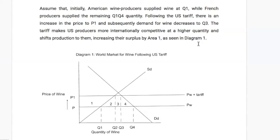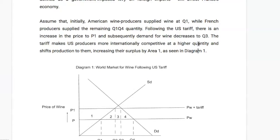Diagram 1 is clearly labeled as 'Diagram 1: World Market for Wine Following US Tariff.' We have quantity of wine on the x-axis and price of wine on the y-axis, going up from world price to world price plus tariff. Initially, American wine producers supply wine at Q1, while French producers supply the remaining quantity between Q1 and Q4, where Q4 is the actual demand for wine. Following the US tariff, price increases to P1 and demand decreases to Q3, consistent with the law of demand. I've labeled the specific areas 1, 2, 3, and 4 so I can clearly refer to them when evaluating the tariff's effects.